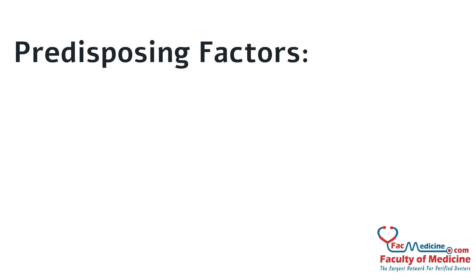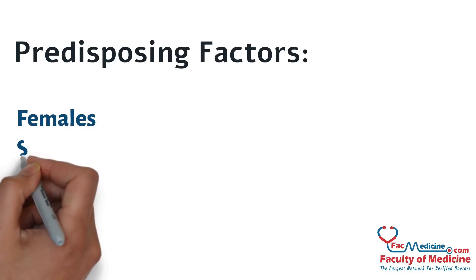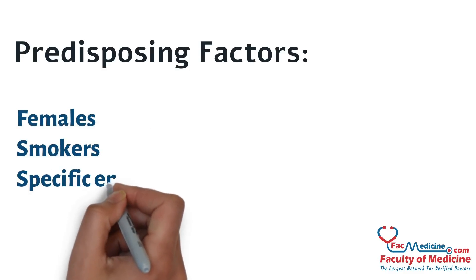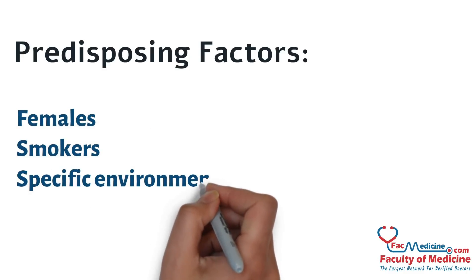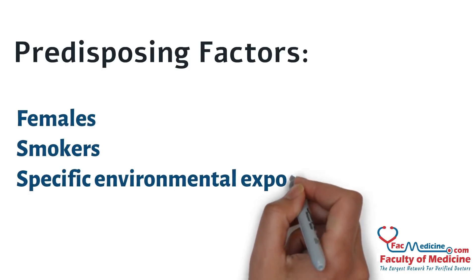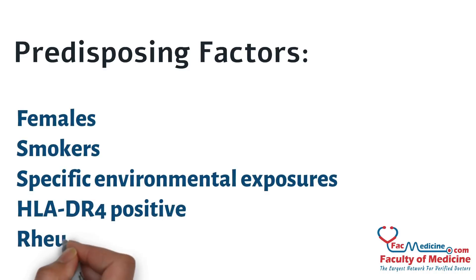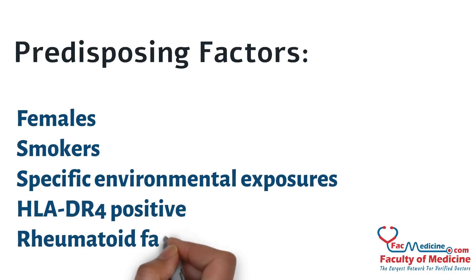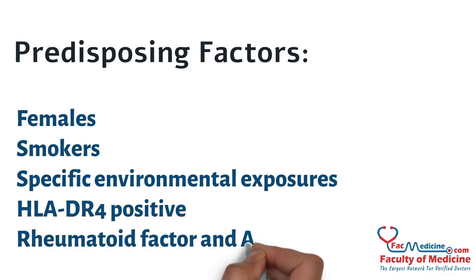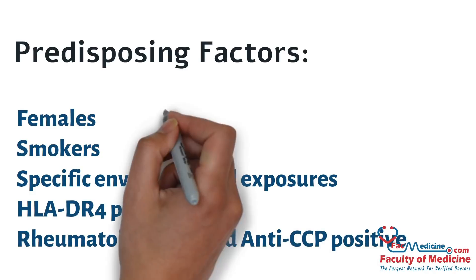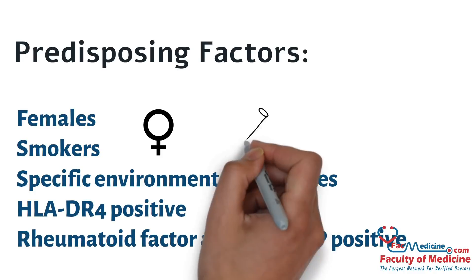Predisposing factors: Probability of developing rheumatoid arthritis is higher in females, smokers, specific environmental exposures, HLA-DR4 positive, rheumatoid factor, and anti-CCP positive.